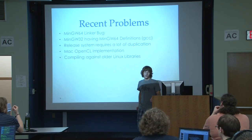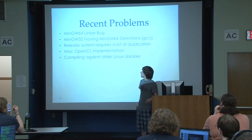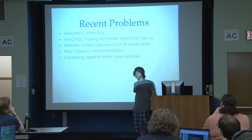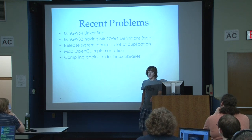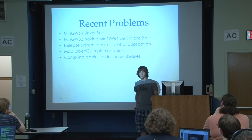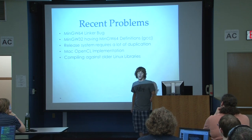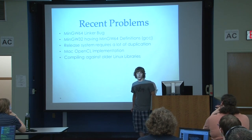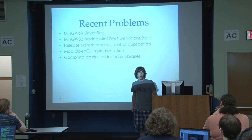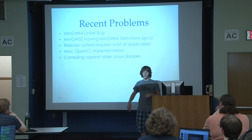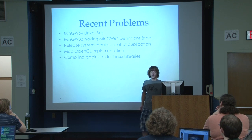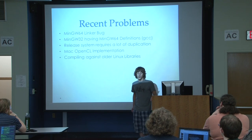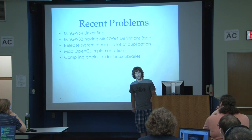Another problem we're running into is for 32-bit Windows. We're trying to compile with NGW64 as the 32-bit compiler, but it maintains 64-bit definitions while compiling as a 32-bit program. This causes issues with our BOINC networking infrastructure — the Berkeley Open Infrastructure for Network Computing. If you comment out a couple statements it works, so I have to figure out whether to use a different compiler or implement a fix for BOINC, since it's also open source.